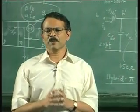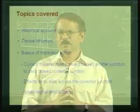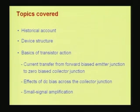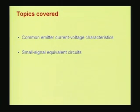With that we complete the discussion of the bipolar transistor. Let us quickly summarize what we did in these lectures on bipolar transistors: first we looked at the historical account of how this device came into being; then we discussed the device structure; then we idealized the structure; and using this idealized structure, we discussed the basics of transistor action, how the current transfer occurs from the forward-biased emitter junction to the zero-biased collector junction. Then we saw the effects of DC bias across the collector junction, then considered small signal amplification, came to the common emitter current-voltage characteristics discussed in detail, and finally considered the AC characteristics or small signal equivalent circuits.